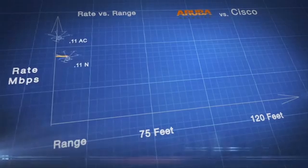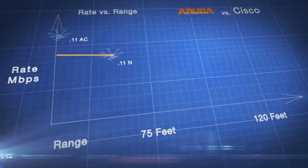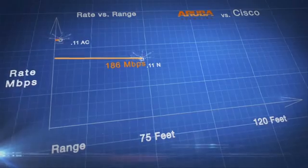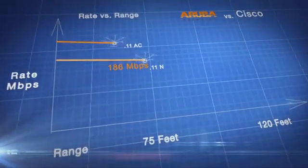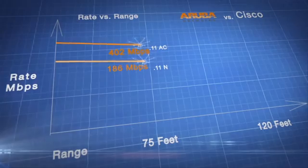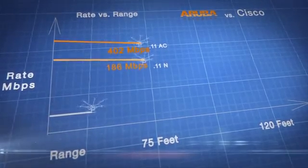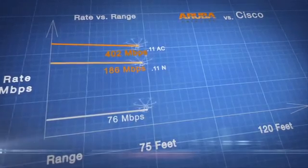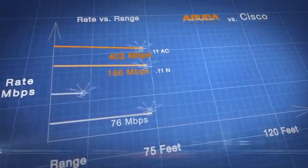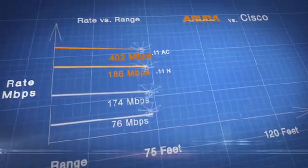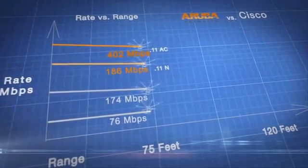At 75 feet from the Aruba access point, the 11n 3-stream download rate was 186 megabits per second, and the 11ac 2-stream download rate was 402 megabits per second. For Cisco, the 11n 3-stream download rate was only 76 megabits per second, and the 11ac 2-stream download rate was a low 174 megabits per second.